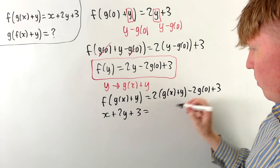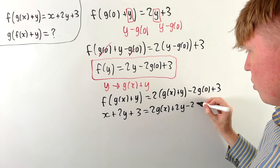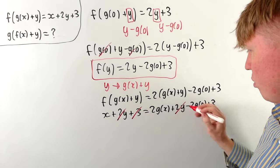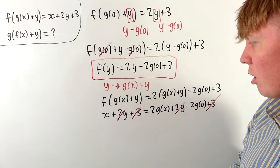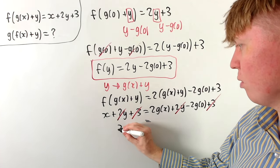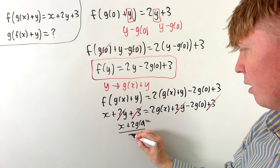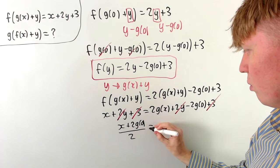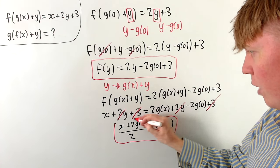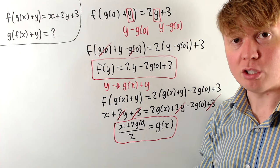Expanding the brackets we get 2 times g of x plus 2y minus 2g(0) plus 3. This is really nice because the 2y plus 3 terms cancel with each other. So we can get g of x on its own — we add 2g(0) to both sides to get x plus 2 times g(0), then dividing through by 2 gives us g of x. So g of x is x over 2 plus or minus some constant.